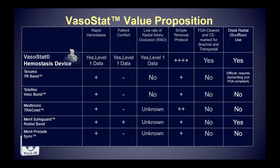The value proposition for this technology is pretty simple and ergonomic — we're basically emulating what manual compression does. We have level one data through randomized trials showing rapid time to hemostasis, level one data showing it's more comfortable than other devices, and it has the lowest rate of radial artery occlusion of any device on the market. It has a very simplified removal protocol, doesn't require protracted incremental balloon deflation, and is both FDA and CE marked for radial, ulnar, brachial, and transpedal use. It can also be used without modifications on-label for distal radial access.